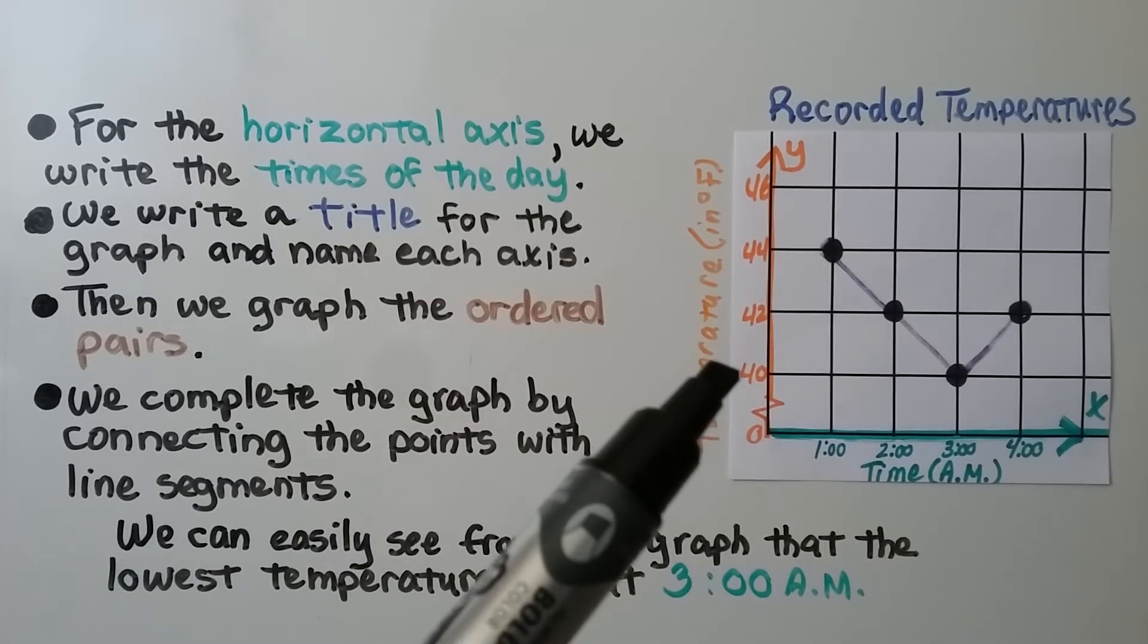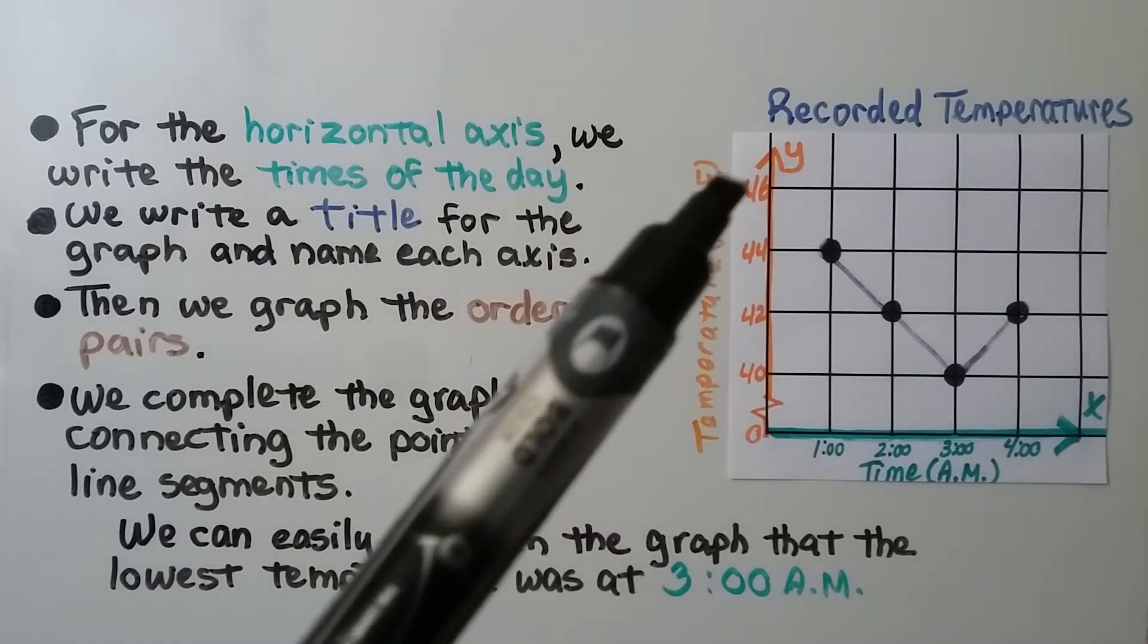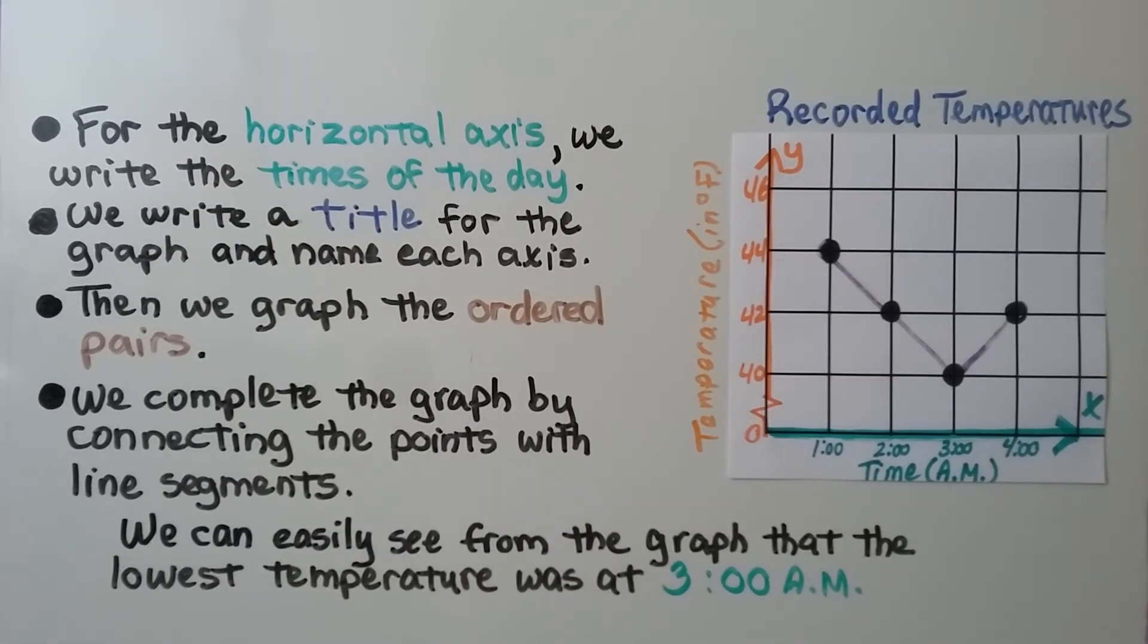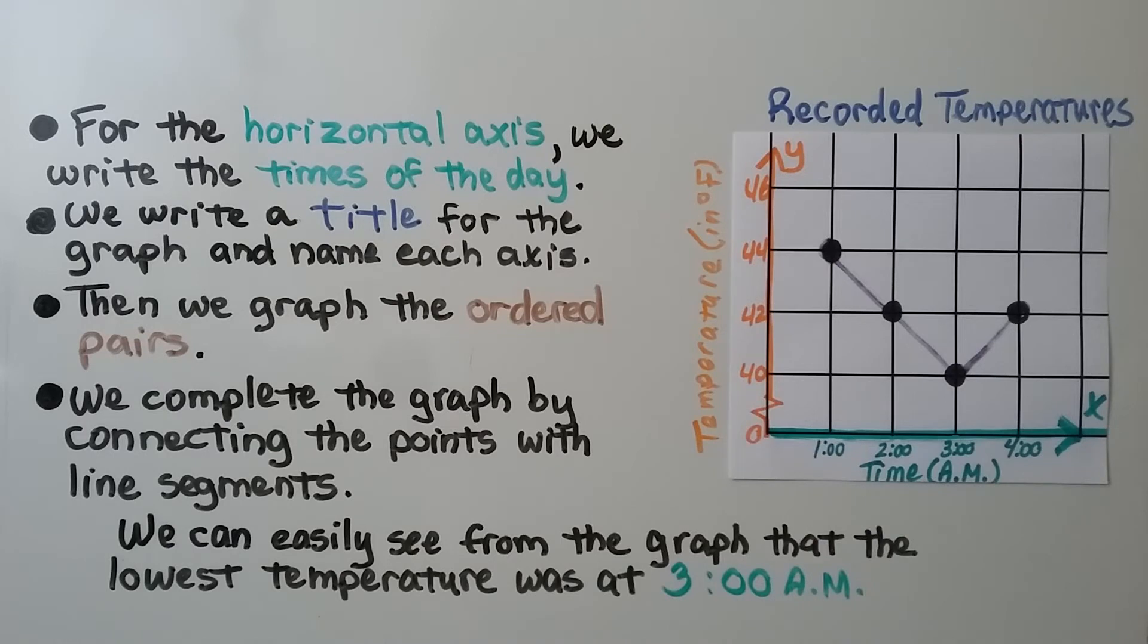We can see it goes 40, 42, 44, 46. For the horizontal axis, we write the times of the day. We write a title, up here, for the graph, and name each axis. We name this one temperatures in degrees Fahrenheit, and this one time for a.m., for the morning.